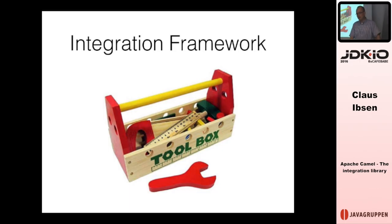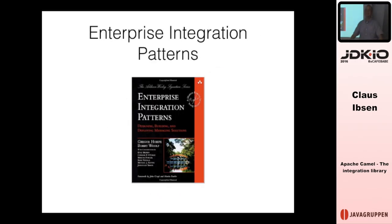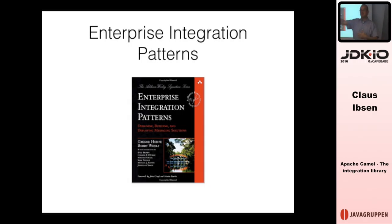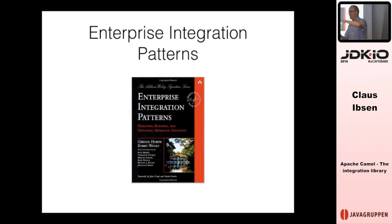What is Enterprise Integration Patterns? It's in fact a book with that same title — a big American book, about 800 pages, published over 10 years ago. We know it as the Integration Bible. The authors, Gregor Hohpe and Bobby Woolf, were consultants who went out to clients and helped them with their integration needs. They saw the same problems occurring over and over again, so they wrote down these problems and their solutions. After a while, they figured out there were so many notes that it could be turned into a book.